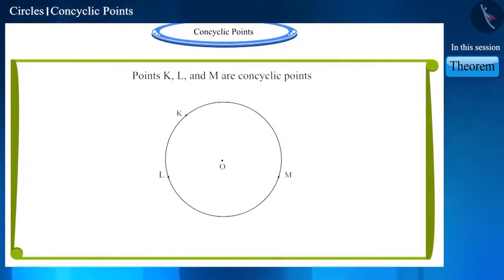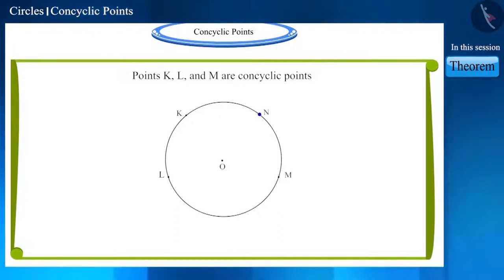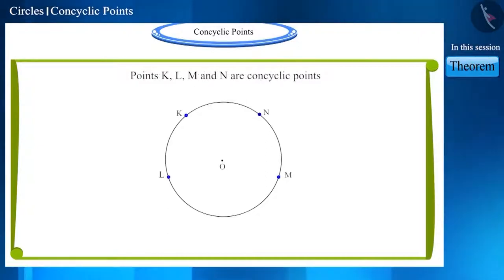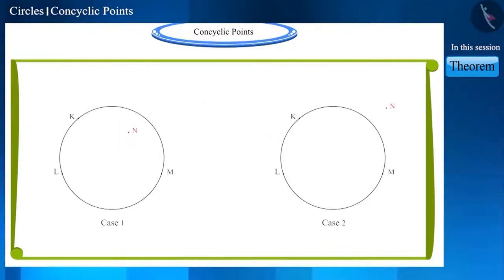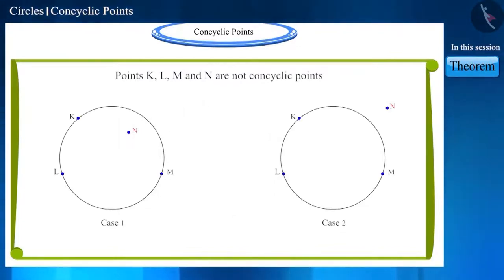If we take a fourth point and it is situated on the circle, then we can say that these four points are concyclic points. But it is quite possible that the fourth point is situated either inside or outside the circle. In such cases, you cannot say that these four points are concyclic points.